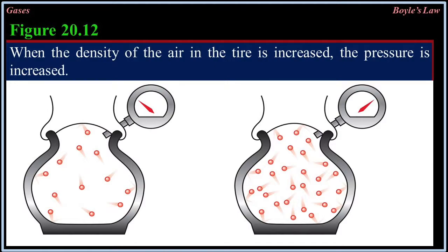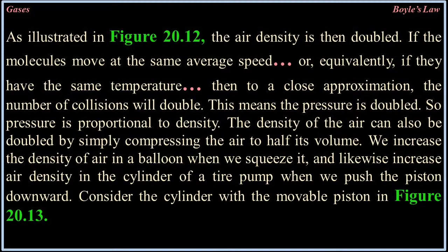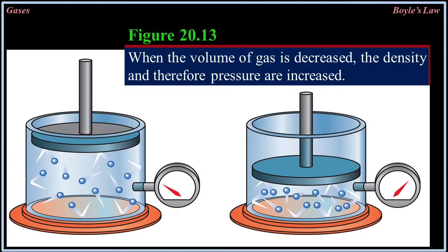As illustrated in figure 20.12, the air density is doubled. If the molecules move at the same average speed — equivalently, if they have the same temperature — then to a close approximation, the number of collisions will double, meaning the pressure is doubled. So pressure is proportional to density. The density of the air can also be doubled by compressing the air to half its volume. We increase the density of air in a balloon when we squeeze it, and likewise increase air density in the cylinder of a tire pump when we push the piston downward. Consider the cylinder with the movable piston in figure 20.13.